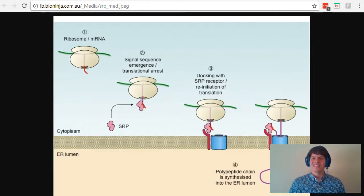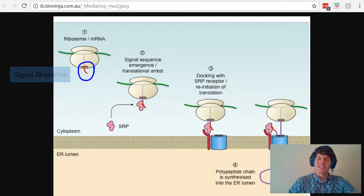So, what is a signal sequence? Sometimes, when mRNA is being translated, the first segment of amino acids are called the signal sequence. In this image, it would be these amino acids right here depicted in red.